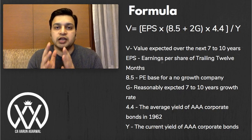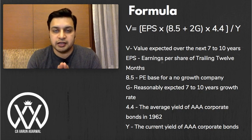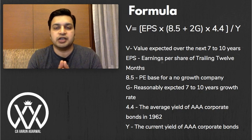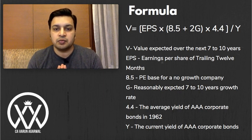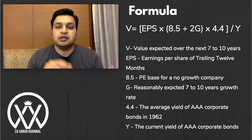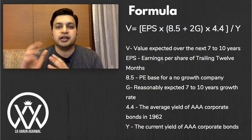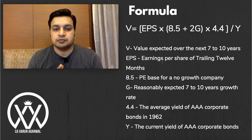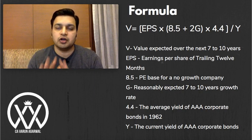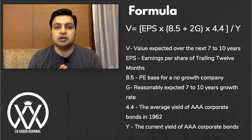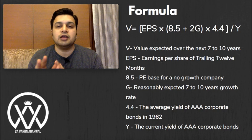EPS is the earnings per share for the trailing 12 months — from the day we are calculating, we take the past 12 months EPS, not the last reported year. The constant 8.5 is taken as the normal PE for any company without extraordinary growth. G is the anticipated average growth of the company over the next 5 to 10 years. The constant 4.4 is the average yield of AAA corporate bonds when Graham made this formula — we keep that number unchanged. Y is the current yield of AAA corporate bonds. So only three values need to be filled in: EPS, growth rate G, and current bond yield Y.